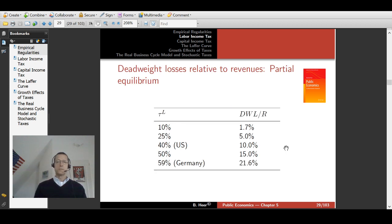Empirical values for this labor supply elasticity amount to approximately 0.3, so we can compute the deadweight loss relative to the tax revenue as a function of the labor income tax rate tau L. For example, for a labor income tax rate of 10 percent, the deadweight loss is about 1.7 percent of tax revenue. As you can see, this increases quadratically, non-linearly, with the tax rate. For the United States, where you have a tax wedge on labor income of 40 percent—this includes the federal income tax, social security contribution of both employees and employer, and a consumption tax—this number is computed by Prescott. You get a distortion of 10 percent, meaning that there's an excess burden of 10 percent of the revenues. In countries like Germany, where the tax wedge amounts to 59 percent, this excess burden is already about 22 percent of tax revenue.